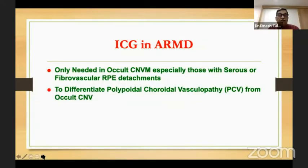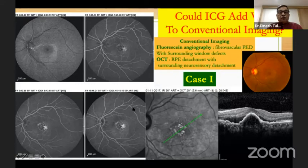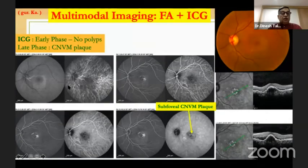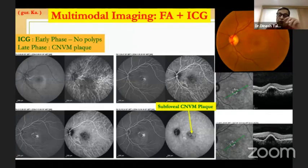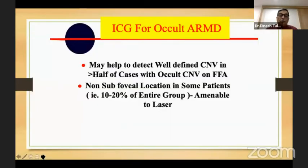In AMD, you need ICG basically for occult CNVMs, and also for that form of occult CNVM — PCV — which is now becoming very commonly diagnosed. This was a fibrovascular PED visible on OCT, and when you do the combined ICG and FA, you can see in the late phase a plaque is found. ICG may help you detect a well-defined CNVM in half the patients of occult CNVM, and in some of them it may turn out to be a subfoveal location which may be amenable to treatment.